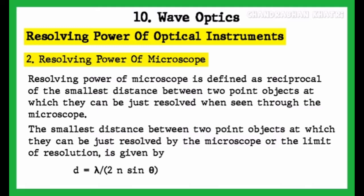Resolving power of microscope is defined as the reciprocal of the smallest distance between two point objects at which they can be just resolved when seen through the microscope. The smallest distance between two point objects at which they can be just resolved — the limit of resolution — is given by small d equals lambda upon 2n sin theta.